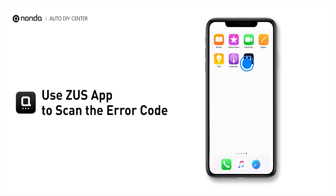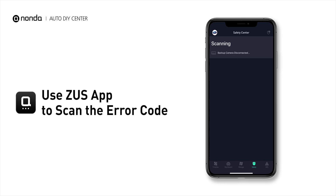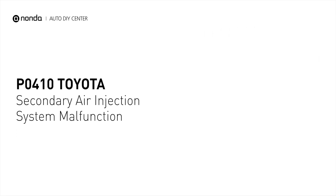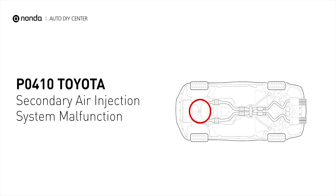Use the Zeus app to scan your vehicle and see the error code P0410. It indicates that the engine control module detected the engine oxygen sensor did not detect an increase in the oxygen level in the exhaust when the air injection system was commanded on during an active test.